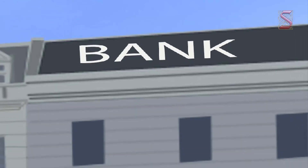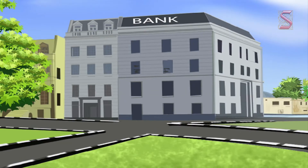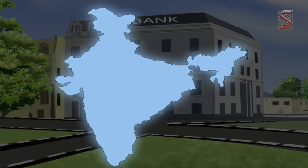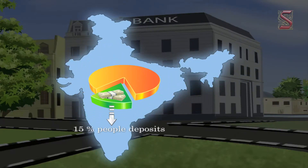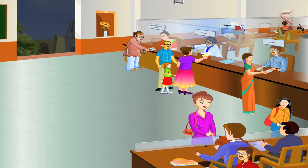Banks keep only a small portion of people's deposits as cash with themselves. Banks in India these days hold about 15% of their deposits as cash to pay depositors who might come to withdraw money. Just imagine if all the depositors went to the bank to withdraw their money at the same day and same time — obviously the bank would not be able to pay up.